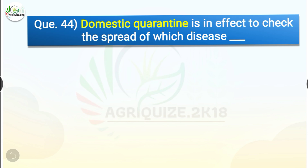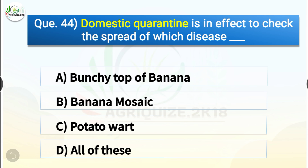Question number forty-four: Domestic quarantine is in effect to check the spread of which disease? The options are Bunchy Top of Banana, Banana Mosaic, Potato Wart, or all of these. The correct answer is option D, all of these. Domestic quarantine is in effect to check the spread of all three diseases: Bunchy Top of Banana, Banana Mosaic, and Potato Wart.